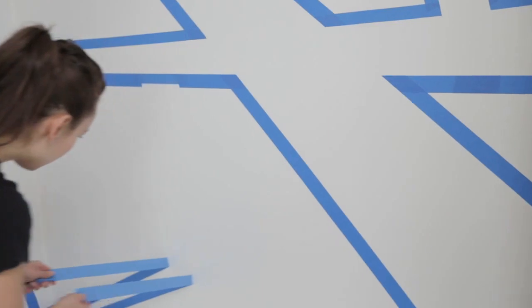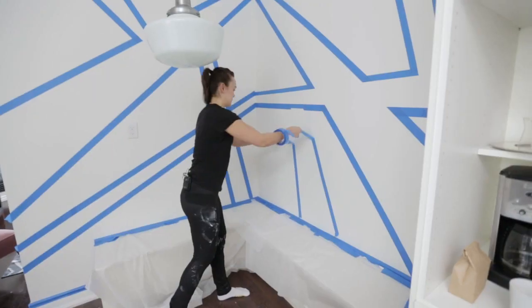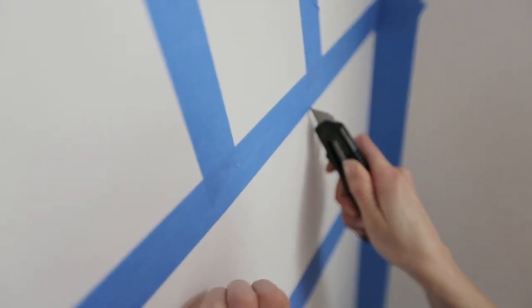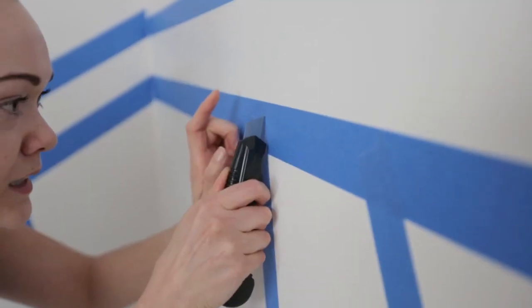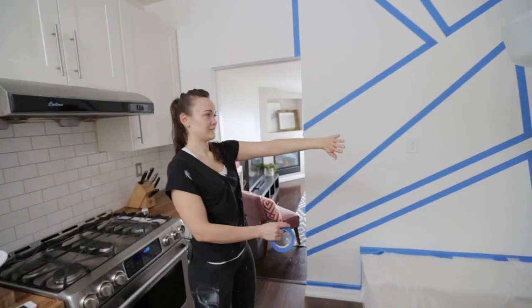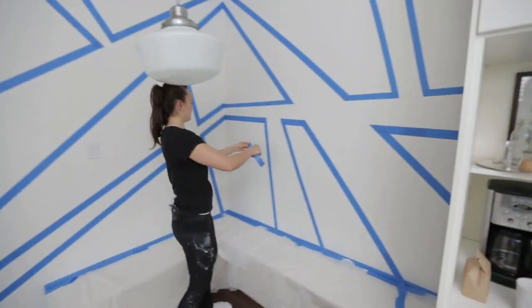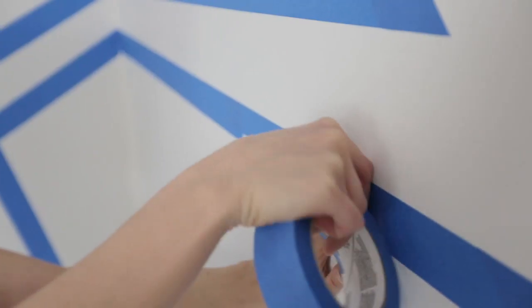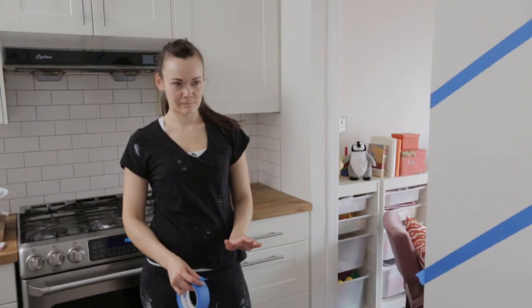And if I made a mistake, the tape was actually really forgiving if I had to re-angle my lines. I had to cut my painter's tape to create some sharp corners, but it was really easy to do with an exacto. The key thing to remember with this design is to visualize the negative space versus the painted lines to make sure that everything is in balance.